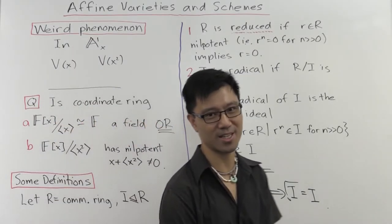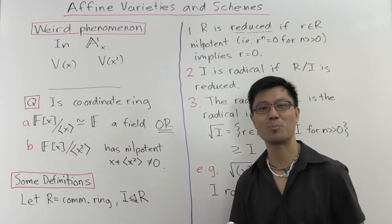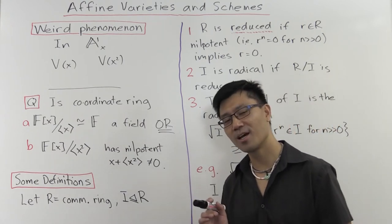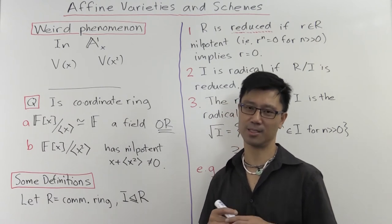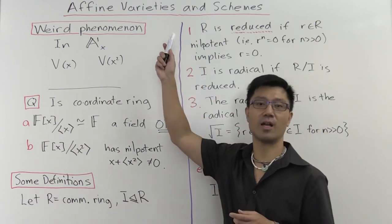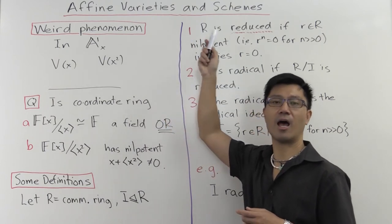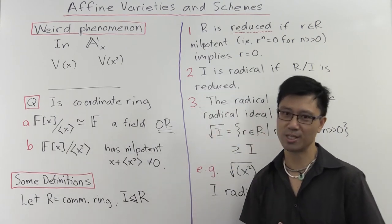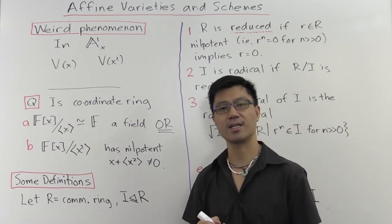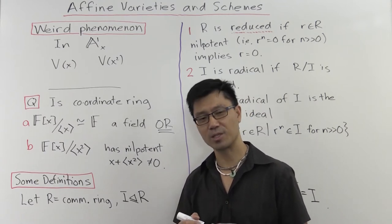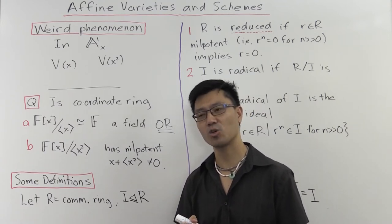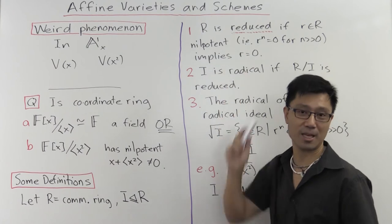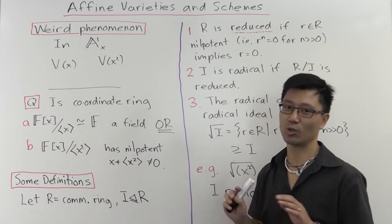Hi, I'm Daniel Chan from UNSW Sydney. Welcome to another adventure in pure mathematics. In this video, I'd like to address a rather subtle point that I've carefully avoided in this playlist up until now, and that's the difference between the notion of an affine variety and an affine scheme. The notion of a scheme in algebraic geometry was introduced by Grothendieck, one of the great figures of 20th century mathematics and arguably the founder of modern algebraic geometry. When he introduced the notion of a scheme, it caused quite a scandal.